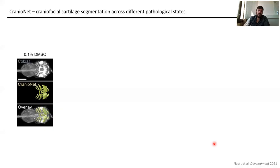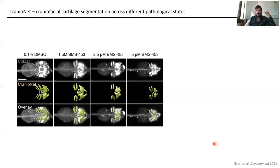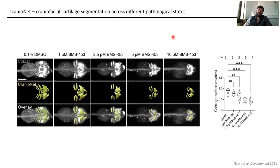We trained these models to be performant across different pathological states — which is not easy, because if you train a neural network to recognize something like the wild-type baseline and things change too much due to a CRISPR pathological state, accuracy can be significantly lost. We addressed this by generating training data sets with ever-increasing craniofacial abnormalities, exposing tadpoles to BMS453, a retinoic acid inhibitor, at increasing concentrations to decrease craniofacial cartilage. This allowed us to train models consistently accurate across pathological states, enabling feature extraction such as the relative cartilage surface.